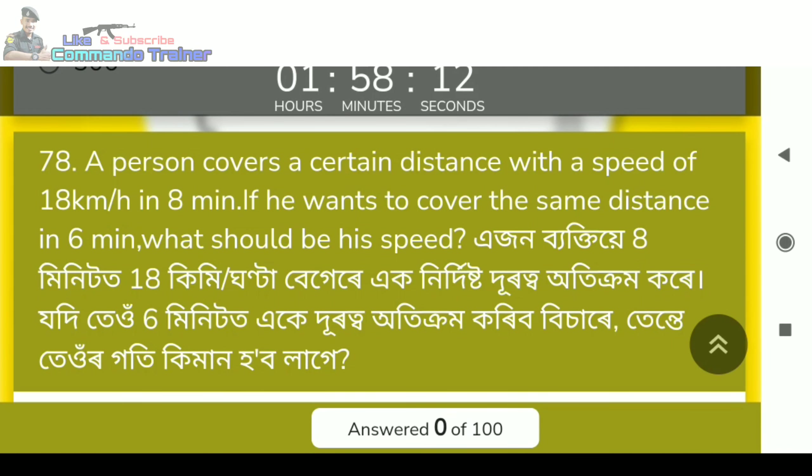A person covers a certain distance with a speed of 18 km per hour in 8 minutes. If he wants to cover the same distance in 6 minutes, what should be his speed?